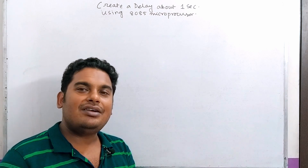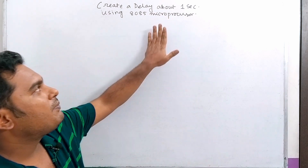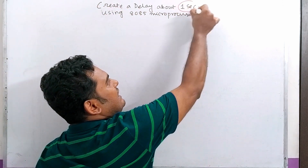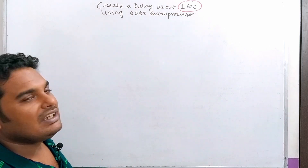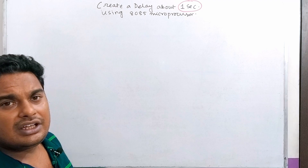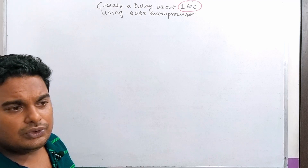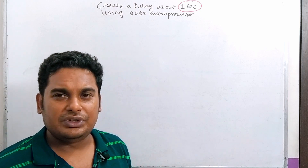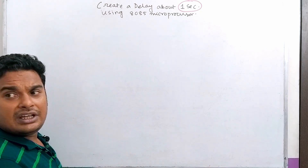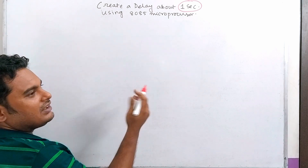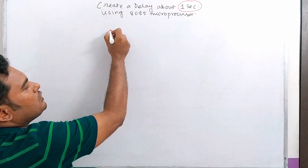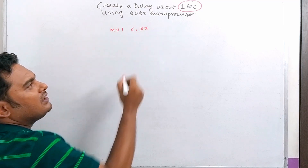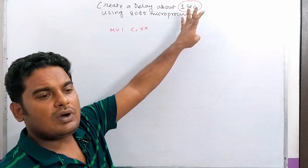The problem today is that the delay required is about 1 second. We need to delay the microprocessor by 1 second. This is very common and very easy to do. We don't have any changes in our base program — we simply need our 1-second delay.